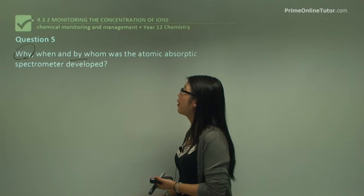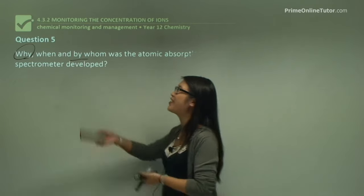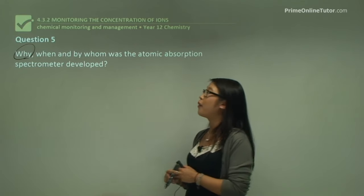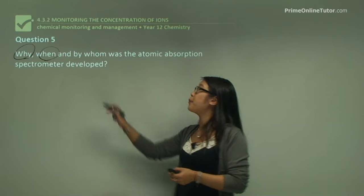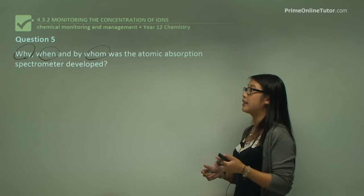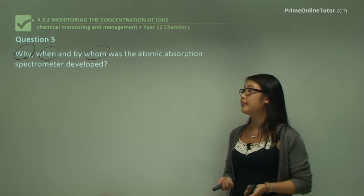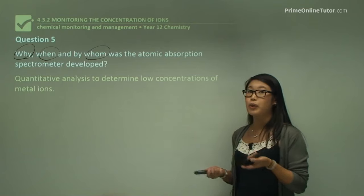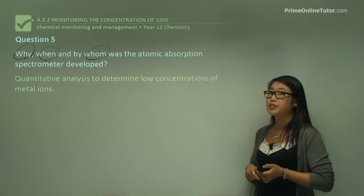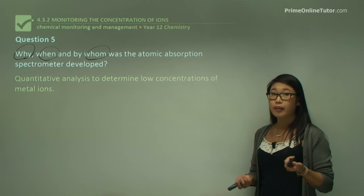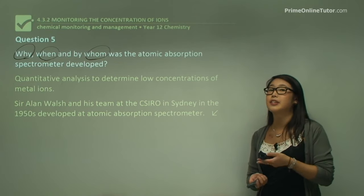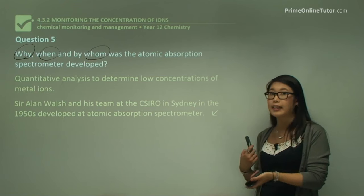Question five asks why, when, and by whom was the AAS technique developed. Why: we needed a quantitative method to analyze and determine low concentrations of metal ions in samples. When: it was in 1950. By whom: Sir Alan Walsh and his colleagues at the CSIRO in Sydney developed this technique.